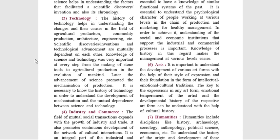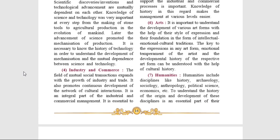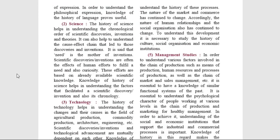The next one is industry and commerce. There was rapid growth in industry and trade, which led to an expansion of mutual social transactions. Social transaction is an integral part of industrial and commercial management. As the nature of industry and commerce changed, there was a change in human relationships and social organization. To understand all this development, it is necessary to study the history of culture, social organization and economic institutions. Therefore, it is important to know the history of industry and commerce.